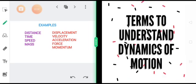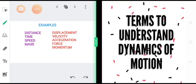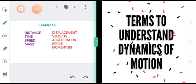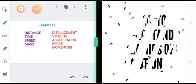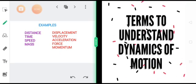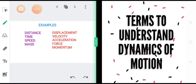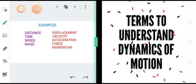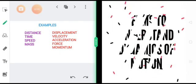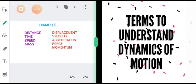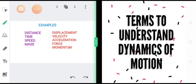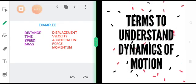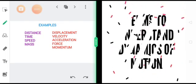I have cited a couple of examples: distance, time, speed, mass, displacement, velocity, acceleration, force, and momentum. We will study some of these terms in this lesson and more in the coming chapters. You might be wondering why I used two different colors. On one side I have distance, time, speed, and mass; on the other side displacement, velocity, acceleration, force, and momentum. I have done it intentionally.